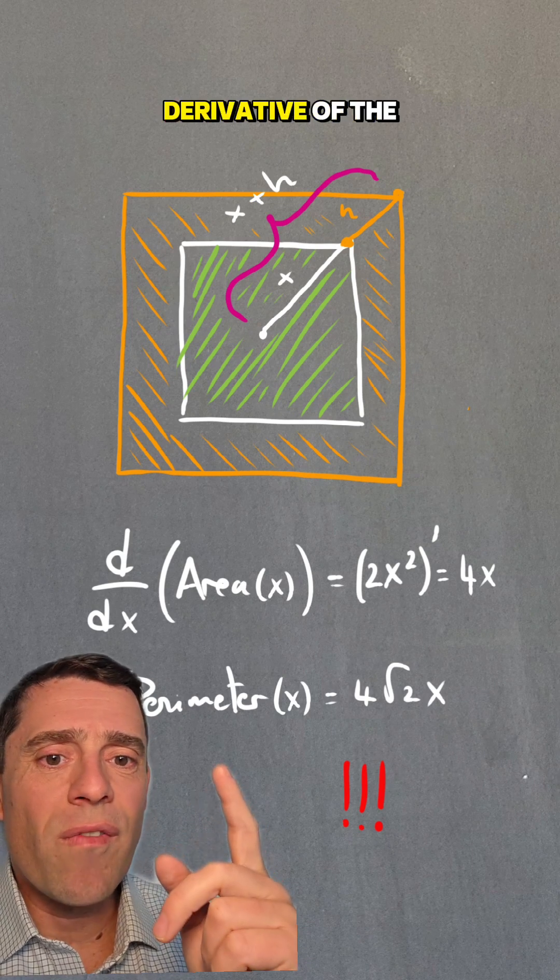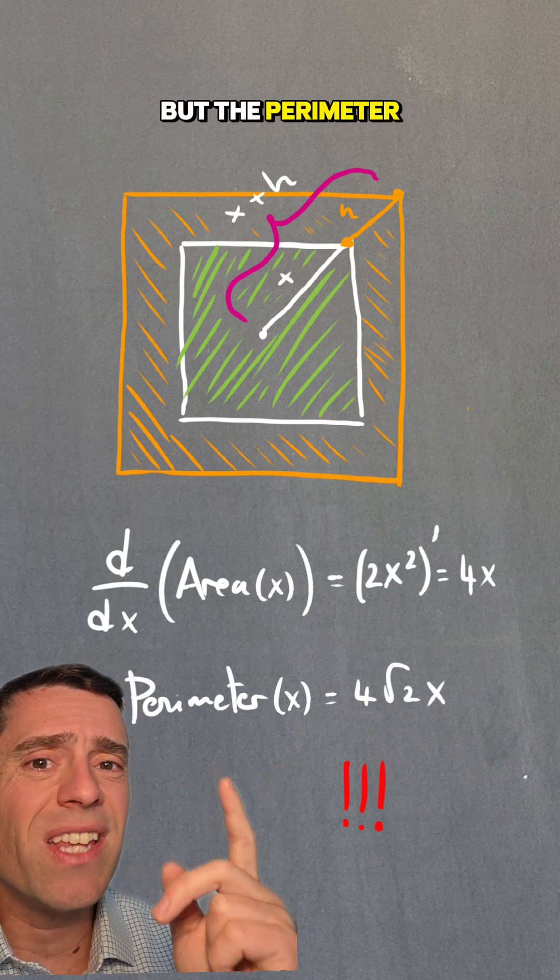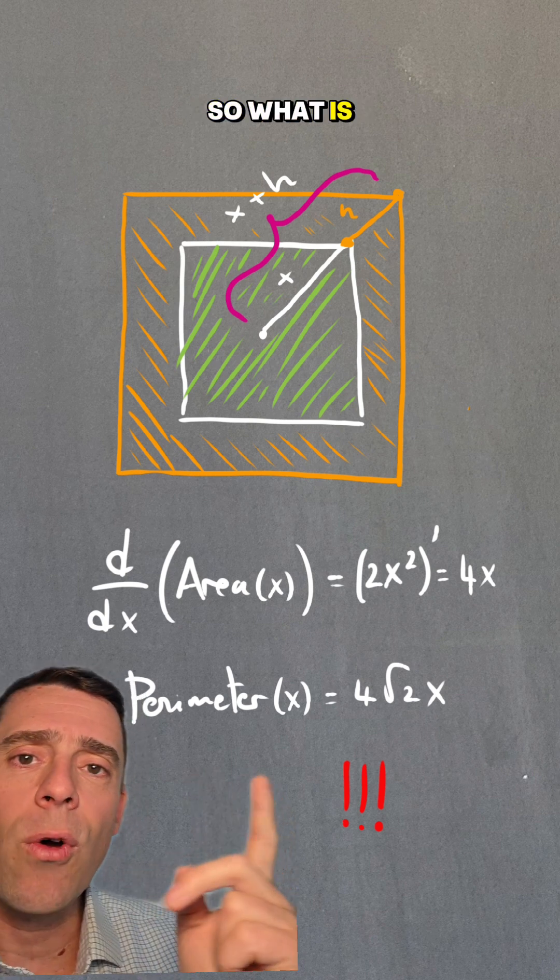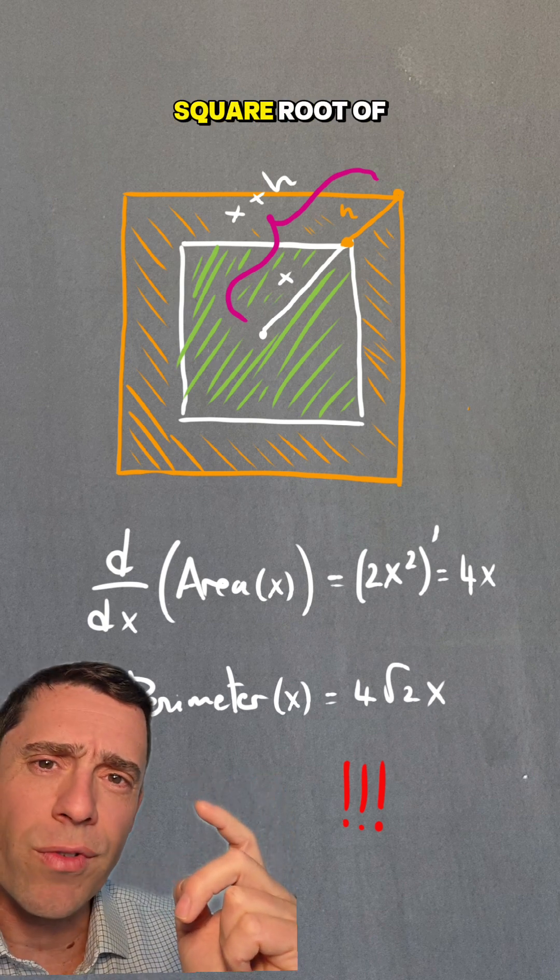And so the derivative of the area is 4x, but the perimeter is 4 times the square root of 2 times x. So what is going on here? Why are they off by a factor of a square root of 2?